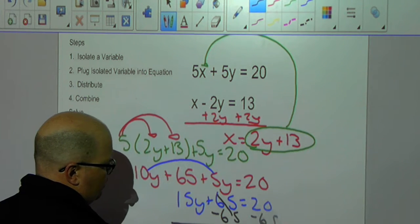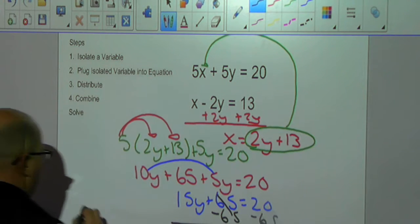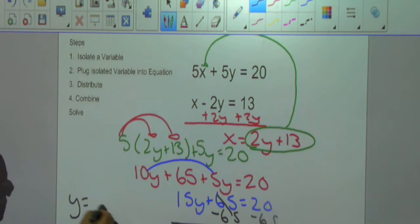Divide both sides by 15. That goes away. And I get y is equal to negative 3.